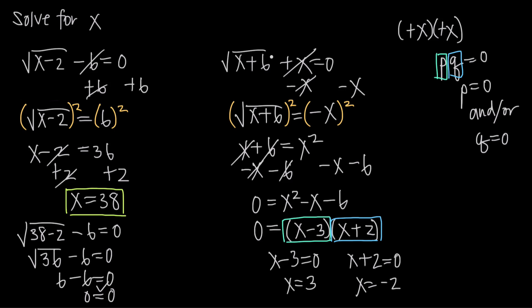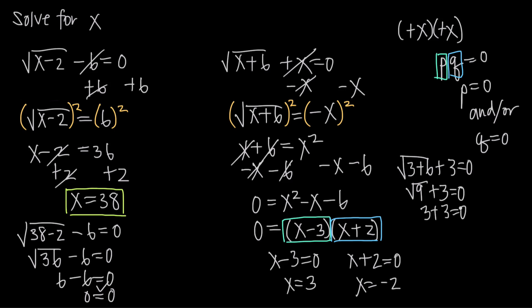Checking x equals 3 in the original equation: we get the square root of 3 plus 6, plus 3, equals 0. That simplifies to the square root of 9 plus 3 equals 0, or 3 plus 3 equals 0, giving 6 equals 0 — which is not true. Therefore x equals 3 is not an actual solution to the radical equation.